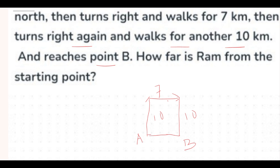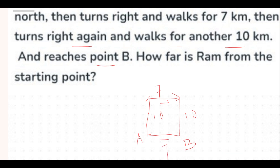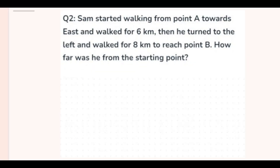How far is Ram from the starting point? Notice this forms a rectangle — the opposite parallel sides are equal. So this side is 7 kilometers, and the distance from point B to the starting point is also 7 kilometers. The correct answer is 7 kilometers.